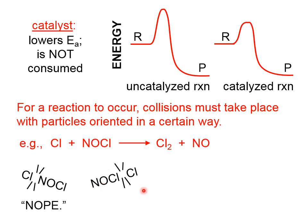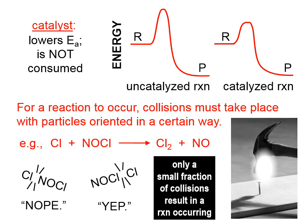But if those same two particles hit in the correct orientation, you can see how we'd produce a Cl₂ — assuming we collide with enough energy. Reactant particles have to not only have enough energy, they have to collide with the right orientation. This means only a small fraction of collisions result in a reaction. Just like pounding a nail: we have to hit it hard enough and properly, or we won't drive it in effectively.